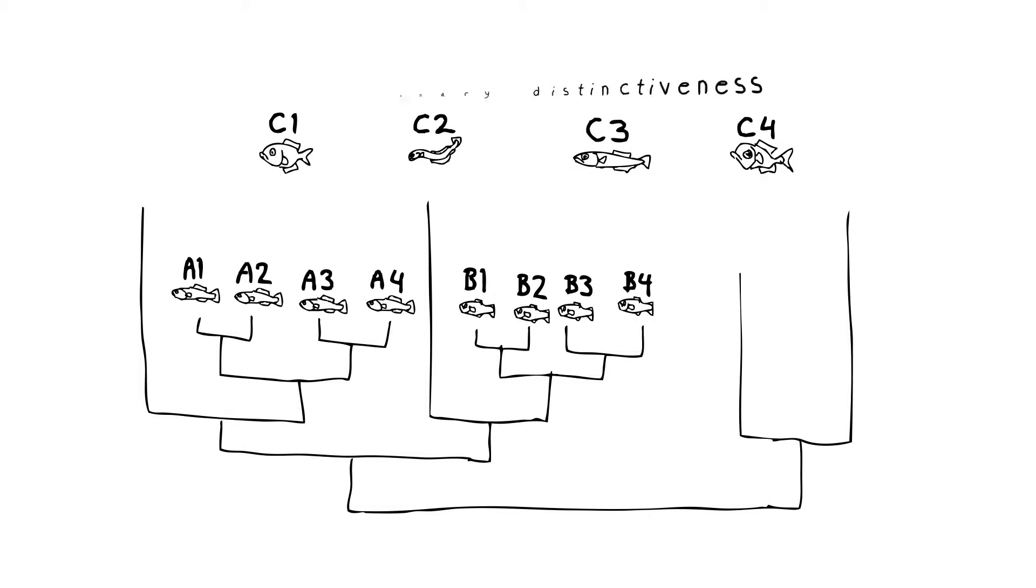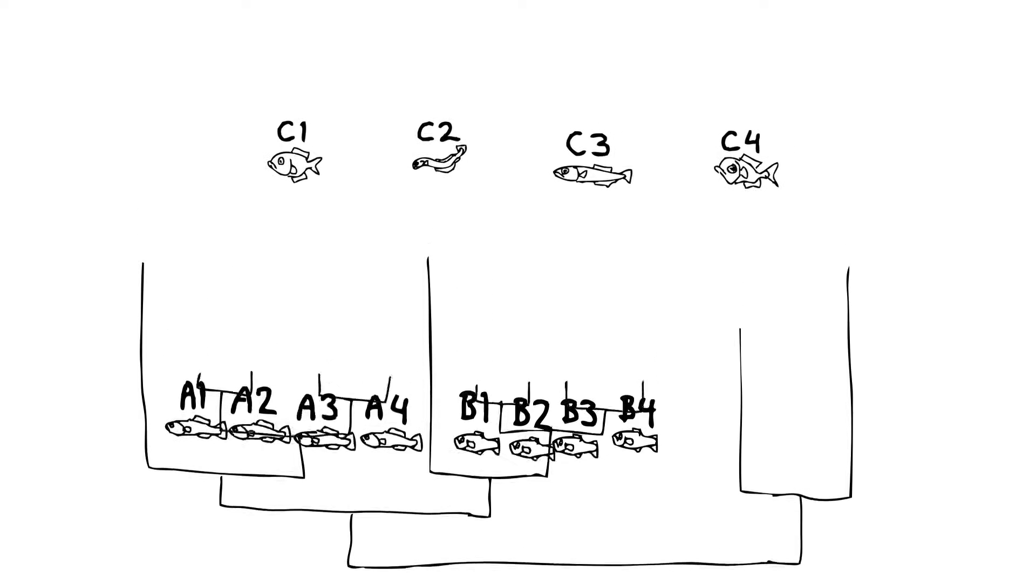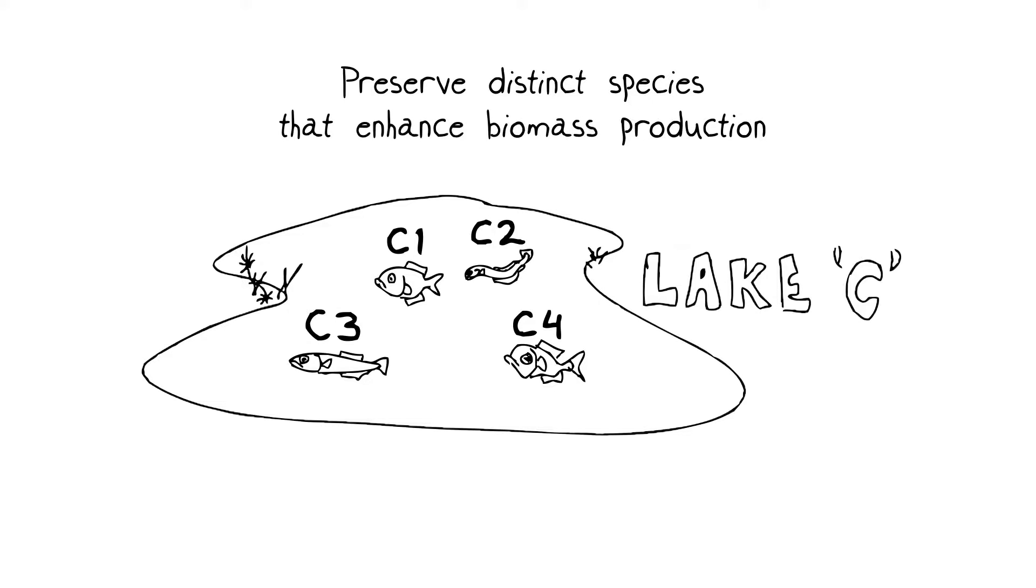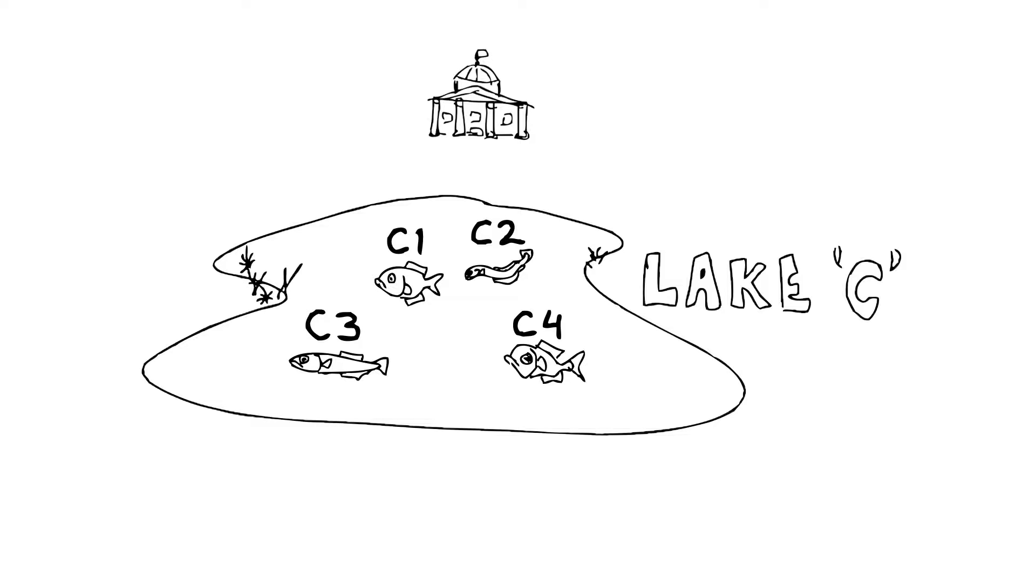It's pretty obvious that the evolutionary distinctiveness or diversity among the four species from Lake C is much greater than the distinctiveness among the species in either Lake A or B. So if you want to preserve really distinct species that most likely function in distinct niches that enhance biomass production and ecosystem health, our friendly government agencies should focus their efforts on protecting the Lake C ecosystem.